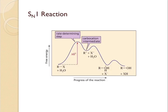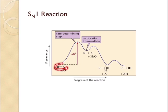Here is the reaction coordinate for the SN1 reaction. You can see that there are two different steps involved. The first step is the formation of the carbocation intermediate, which is the slowest step and the rate-determining step. As you can see from the reaction coordinate, it is only the alcohol halide that is participating in the rate-determining step. The nucleophile only comes in the second step of the reaction to form the product.